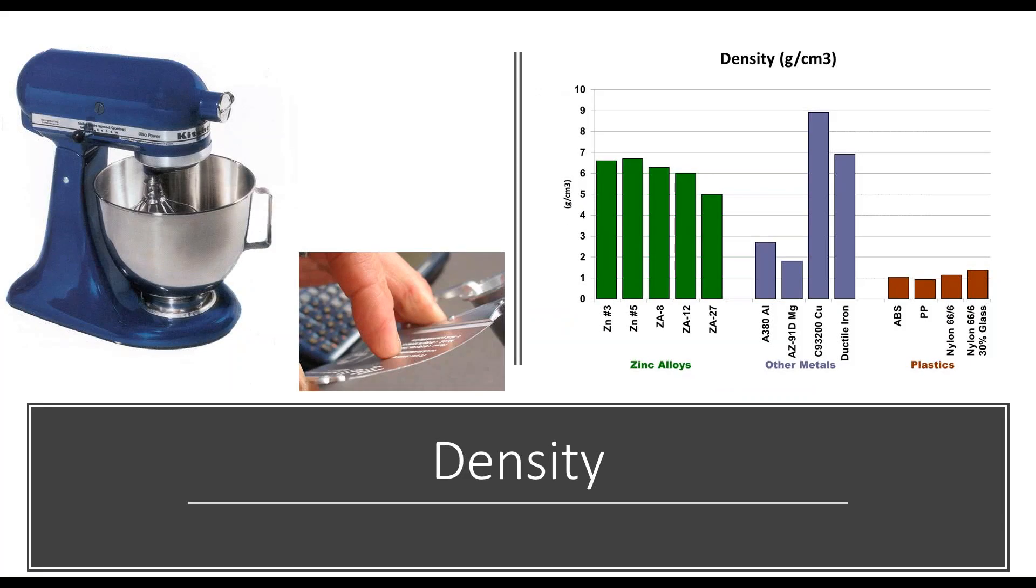Density can be a barrier when converting components to zinc. Zinc is simply heavier than many of the materials that it competes with. This graph shows that zinc is approximately two and a half times heavier than aluminum alloys.